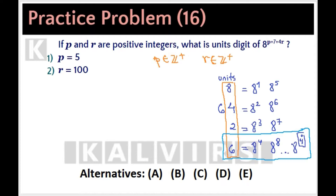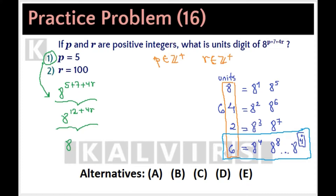Now, with this information, we're going to have a look at the statement we want to know. From statement 1, P equals 5. Therefore, we have 8 to the 5 plus 7 plus 4 times R, which is 8 to the 12 plus 4 times R. Now, 12 is a multiple of 4, and 4 times R is another multiple of 4. The sum of two multiples of 4 is another multiple of 4. Therefore, this power is the same as 8 to a multiple of 4, so the unit digit must be 6. Statement 1 alone is sufficient.